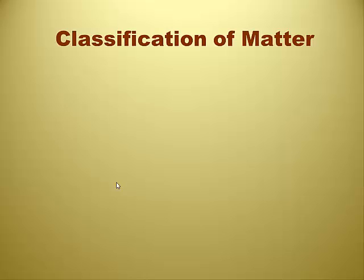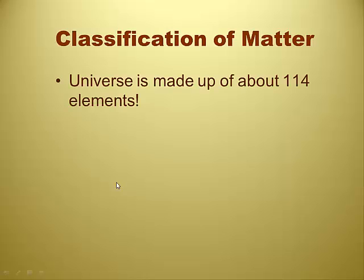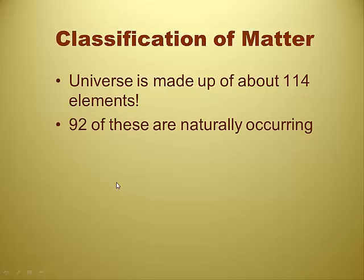Classification of matter. The universe is made up of about a hundred and fourteen elements. Ninety-two of those are naturally occurring. Does that mean the rest of them are all synthetically made? Yeah, I think so. Synthetically — man-made.